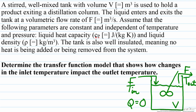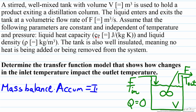In order to do this analysis we have to develop an appropriate balance. If we were to do a mass balance, accumulation equals in minus out, where in is f and out is f. So the accumulation is zero and the mass balance is at steady state, which for our analysis of how a change in input temperature impacts output temperature doesn't help us very much.